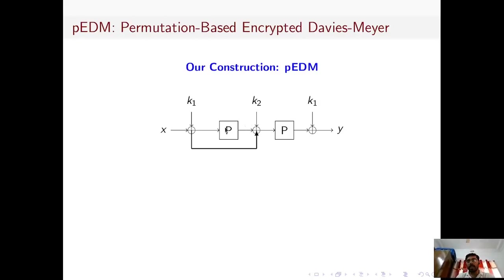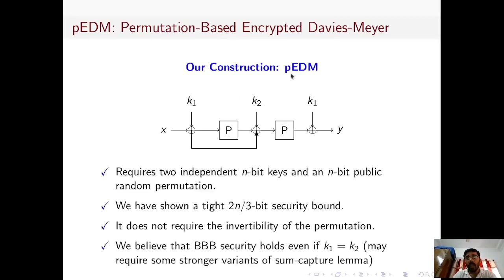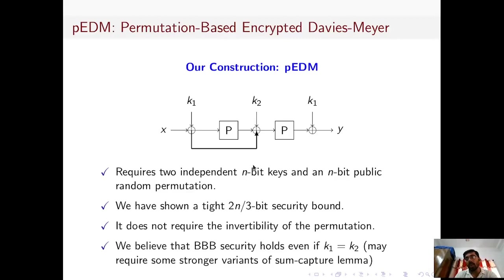Here is our construction that solves that open problem. We propose our construction, which we call the permutation-based Encrypted Davies-Meyer construction. We have shown that this construction requires two independent n-bit keys, is based on a single permutation, and requires only forward calls — no inverse calls. We have shown a tight 2n/3-bit security bound for this construction.